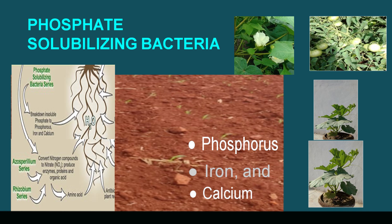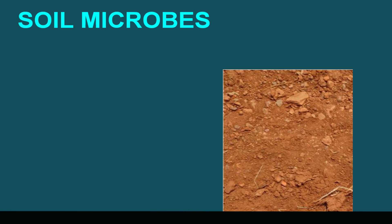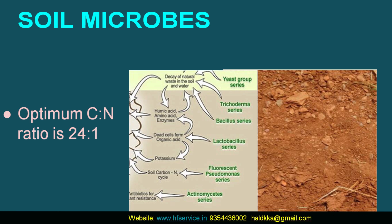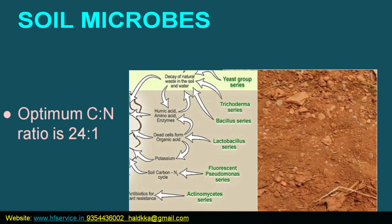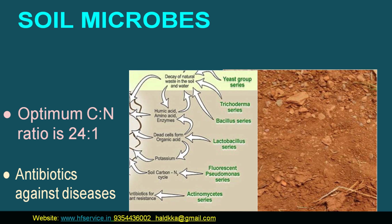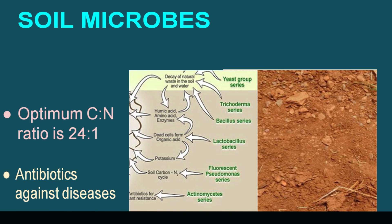This helps their proper growth, flowering, fruiting, and even grain formation. Do you know that the quality of soil is decided on the basis of the carbon-nitrogen ratio present in the soil? And yes, the responsibility to maintain this carbon-nitrogen ratio is also being done by the microbes themselves. Actinomycetes produce antibiotics that protect the plant against diseases and provide them protection.